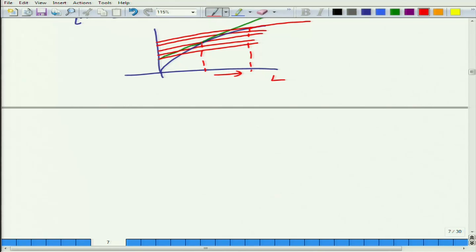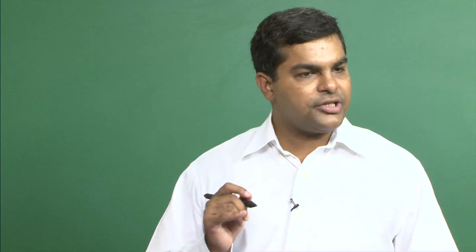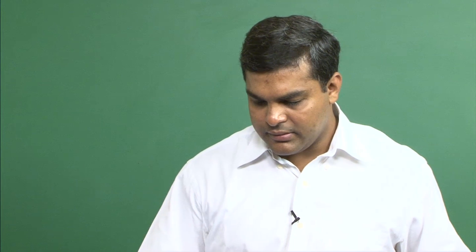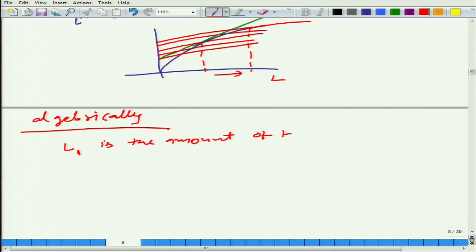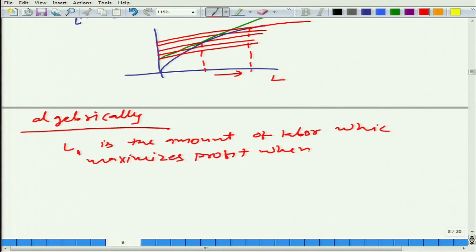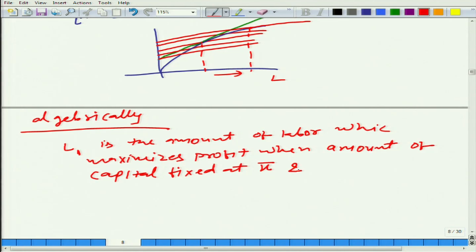Now, what we can do — we can look at it algebraically. It is a good idea to understand what is happening algebraically. So, we can say that L1 is the amount of labour which maximizes profit when the amount of capital is fixed at k-bar and the wage is W1.